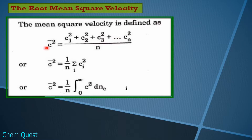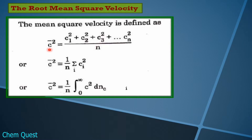Mean square velocity ko hum define karenge — the bar over a quantity represents its mean or average. So mean square velocity will be the sum of the squares of velocities of all the molecules divided by the total number of molecules. For example, molecule 1 is moving with velocity c₁, molecule 2 with velocity c₂, and so on up to n molecules.